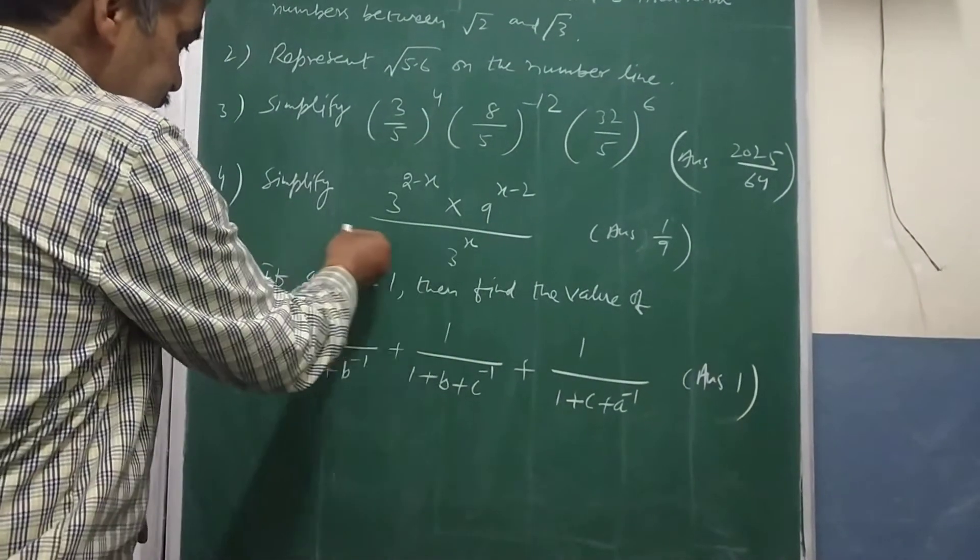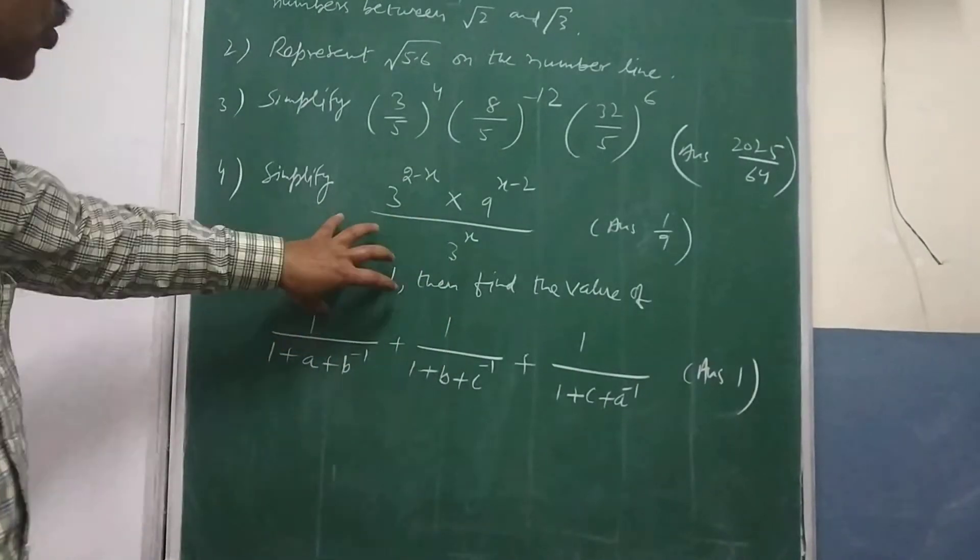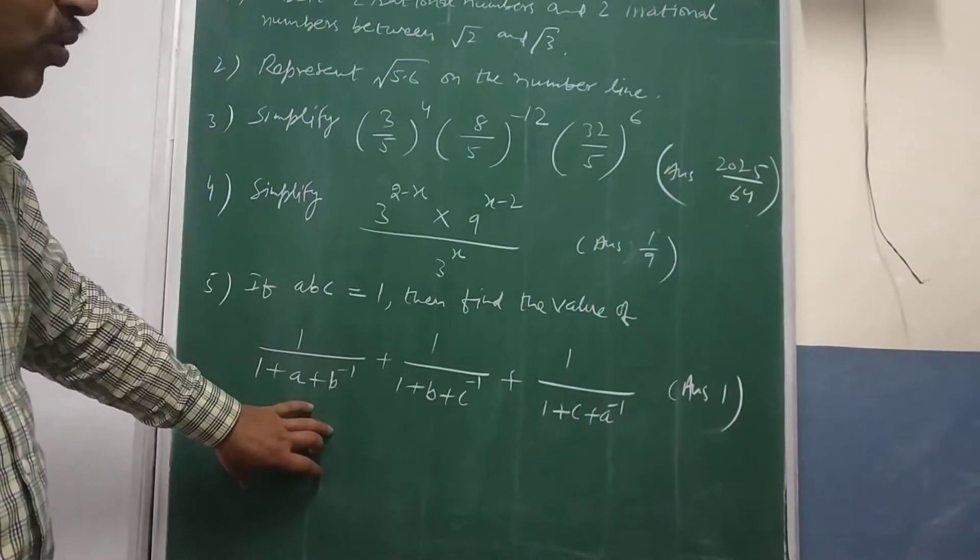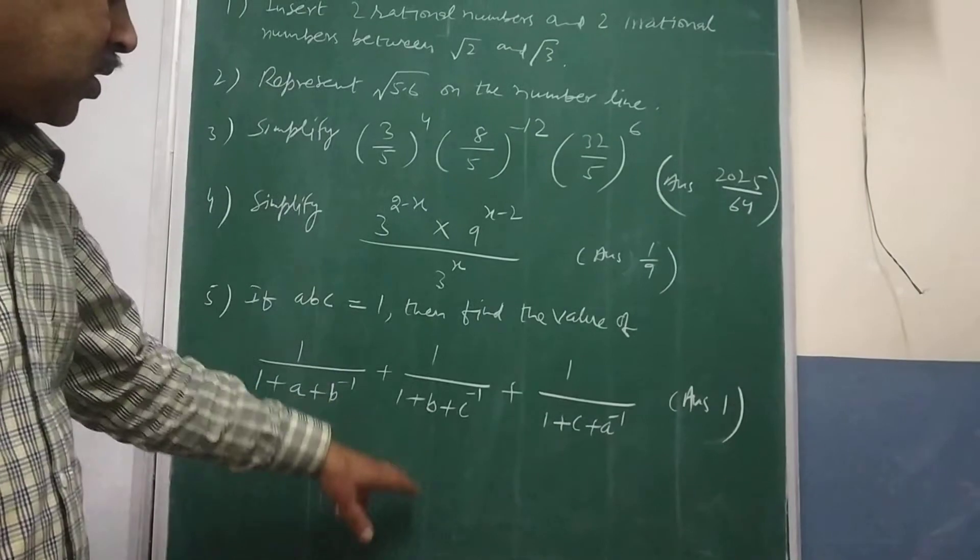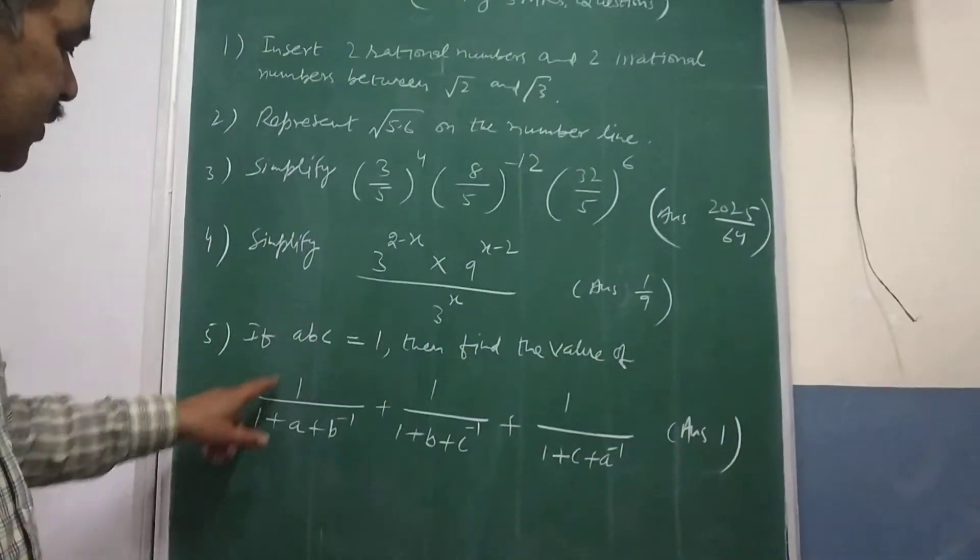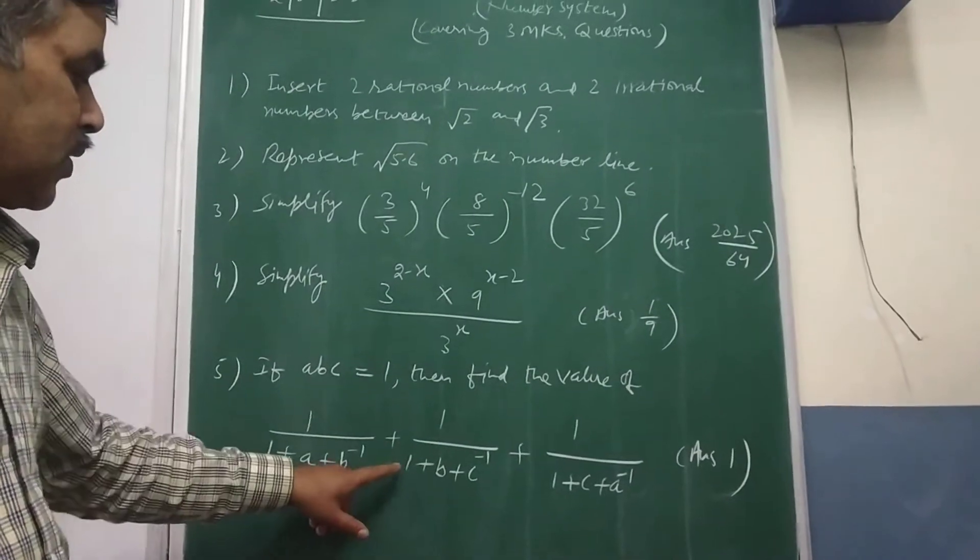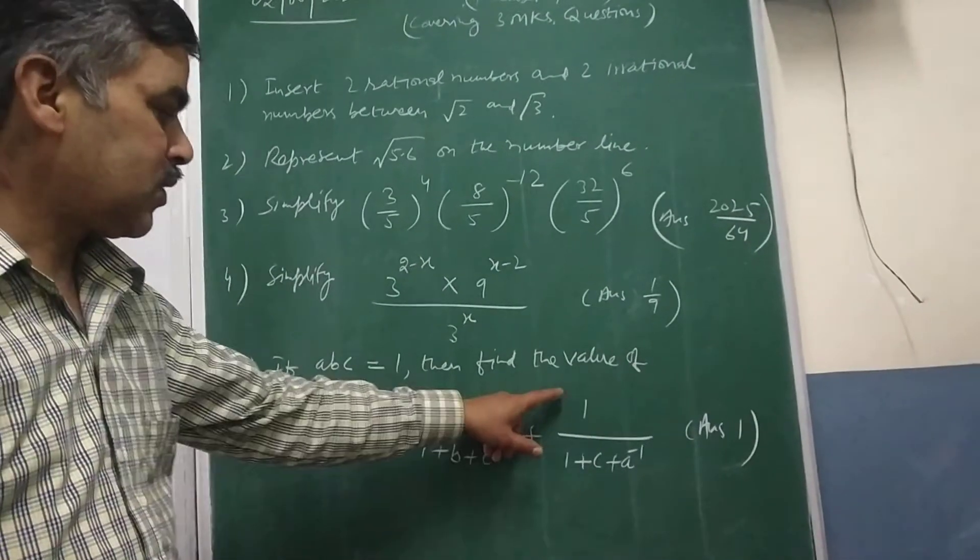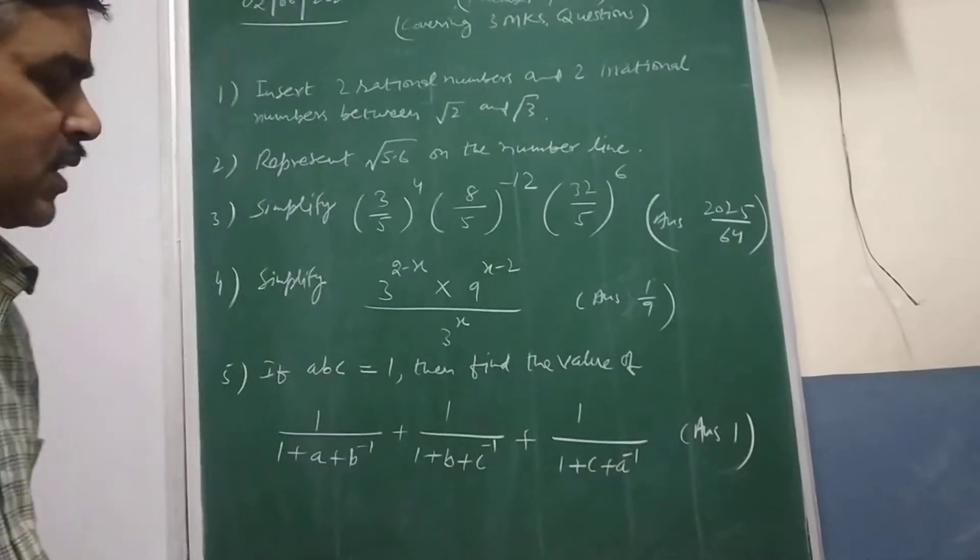Means wherever it is given so try to make best use of this information to get the solution. So this is the question and you need to find the value of this. Here it is 1/(1+A+B^-1), 1/(1+B+C^-1), 1/(1+C+A^-1).